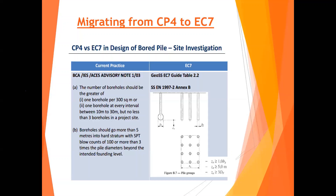EC7 doesn't specify numbers the way CP4 does — it mainly talks about depth: how deep the soil investigation must go. For soil investigation companies and piling companies, you need to take note of this very carefully, before you get into a legal case.